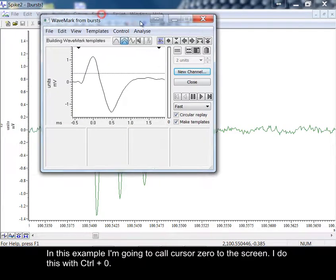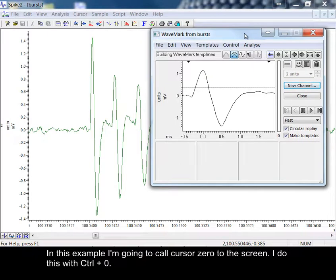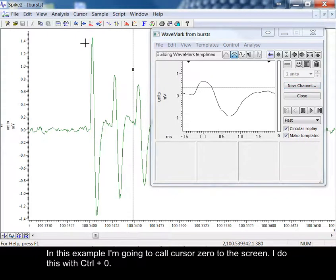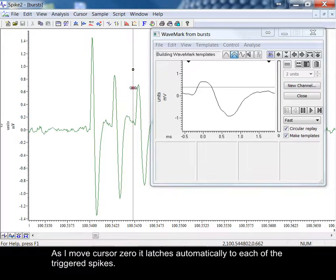In this example, I'm going to call cursor0 to the screen. I do this with control and zero. As I move cursor0, it latches automatically to each of the triggered spikes.